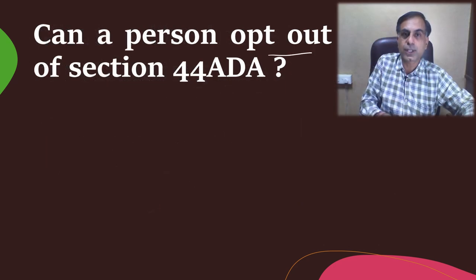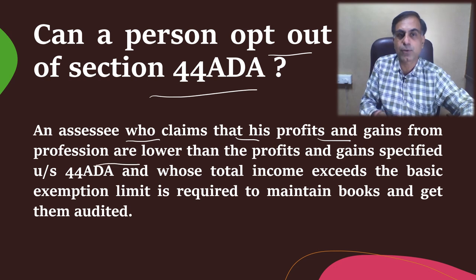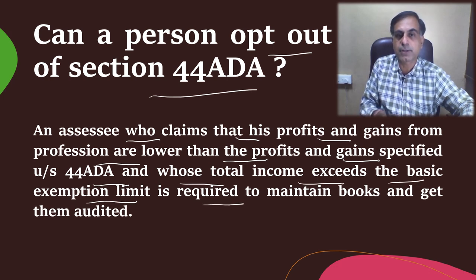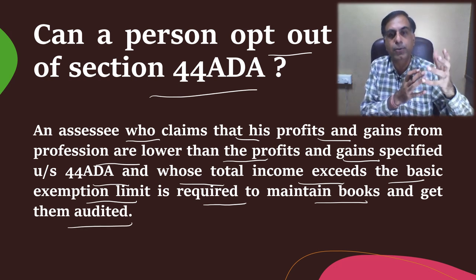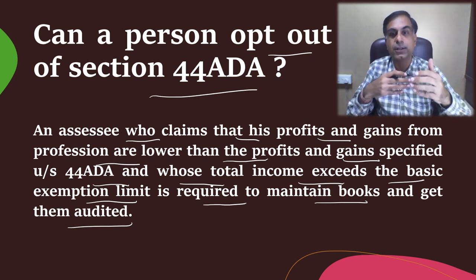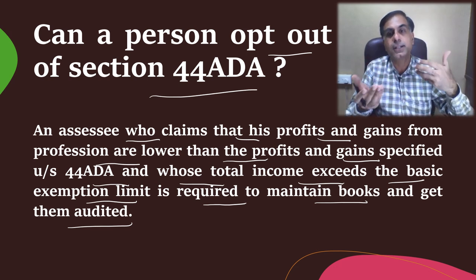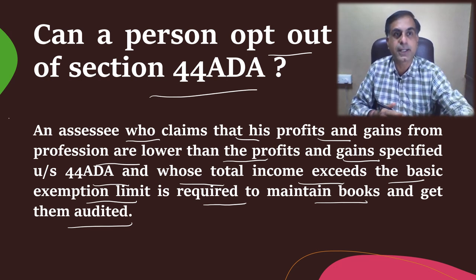Can a person opt out of Section 44 ADA? Yes. In 44 ADA it is specifically provided that an assessee who claims that his profits and gains from the profession are lower than the profit and gains specified under Section 44 ADA, and whose total income exceeds the basic exemption limit, is required to maintain books and get them audited. So if you want to opt out of 44 ADA, you can, provided you maintain books and get them audited. There is no restriction that if you opt out in year one, you cannot come back in year two — you can return to Section 44 ADA in the following year.